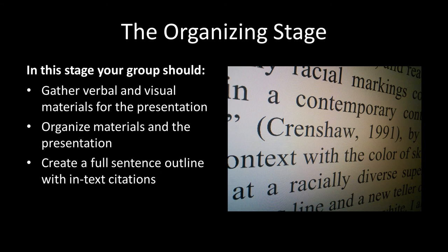Once you've done that, you're able to move on to the organizing stage. During this stage, what you're trying to do is put everything together so that you are situated to give an excellent presentation. Your group members will gather both verbal and visual materials, including all of the research you need, and create an outline. An outline is not meant to be a manuscript — outlines allow for an extemporaneous style of delivery. You want to create a full sentence outline with in-text parenthetical citations, as seen in this visual aid, to cite where your information is coming from. Correctly citing information is also ethical, because not citing information is the same as plagiarizing other people's ideas.